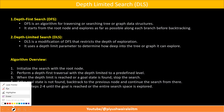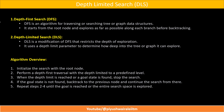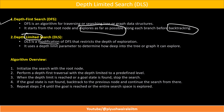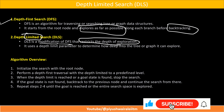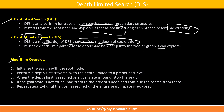Just an overview of what we discussed: DFS is an algorithm for traversing or searching a tree or graph that starts from a root node and explores as far as possible along each branch before backtracking. DLS is a modification of DFS that restricts the depth of exploration — it uses a depth limit parameter L to determine how deep into a tree or graph it can explore. The algorithm initializes with the root node, performs depth first traversal up to the predefined depth limit, and stops when the limit is reached or the goal is found. If the goal is not found, it backtracks and continues until the goal is reached or the entire space is explored.